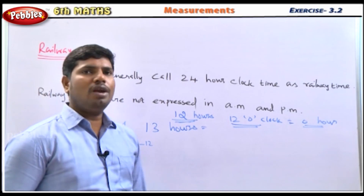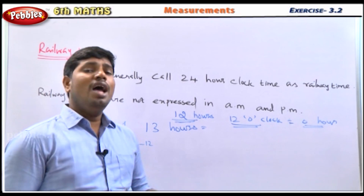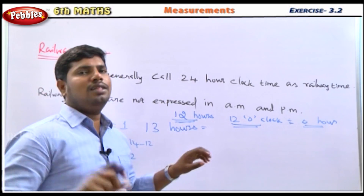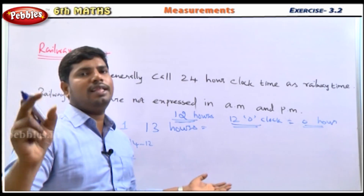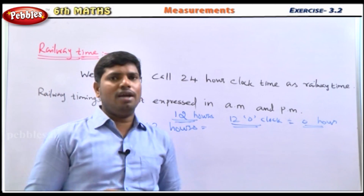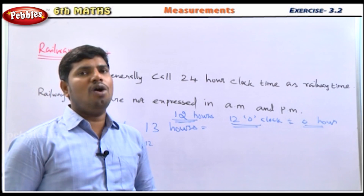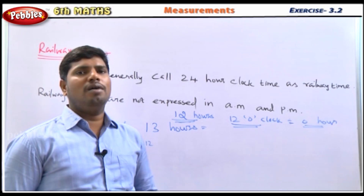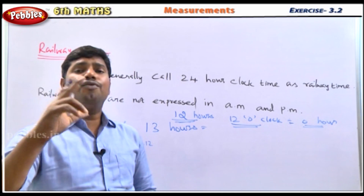16 hours is 4 o'clock and 18 hours: 18 minus 12 gives 6 o'clock. If we say morning, 6 o'clock we say morning. 12 plus 6 is 18 hours, so 6 o'clock in the evening is 18 hours. When you say 24 hours, it is complete — a full 24-hour cycle.